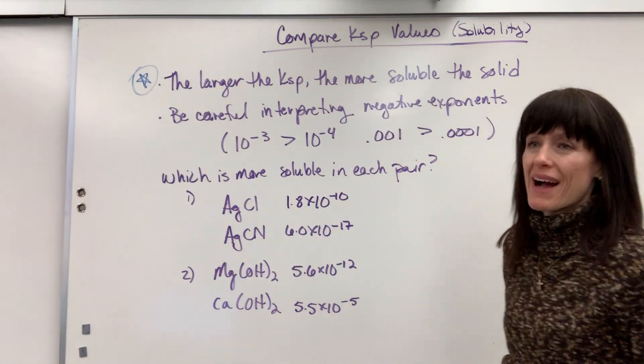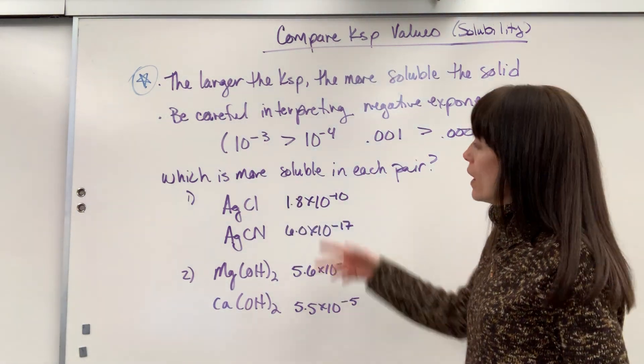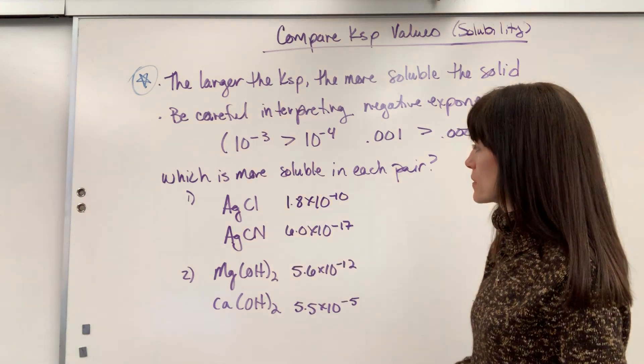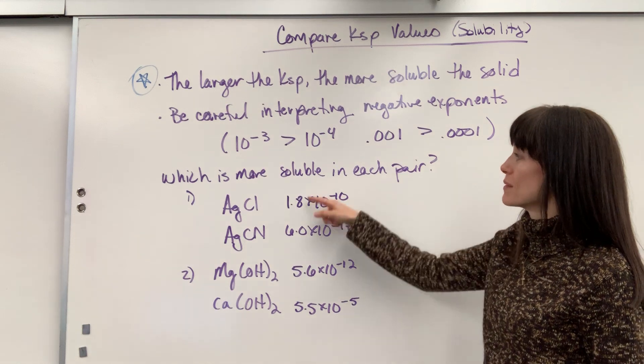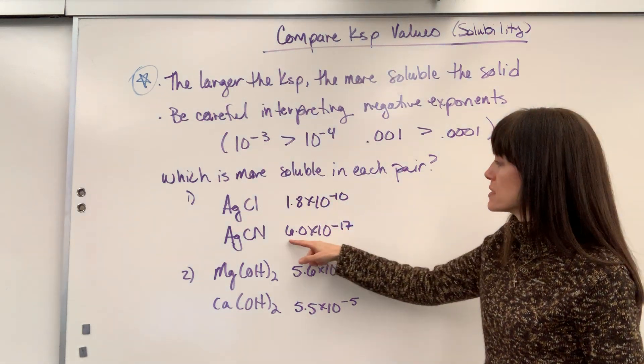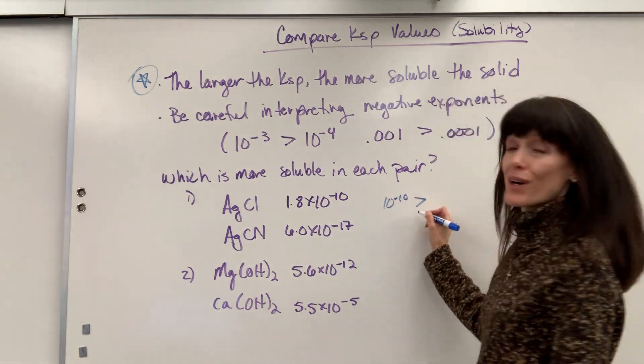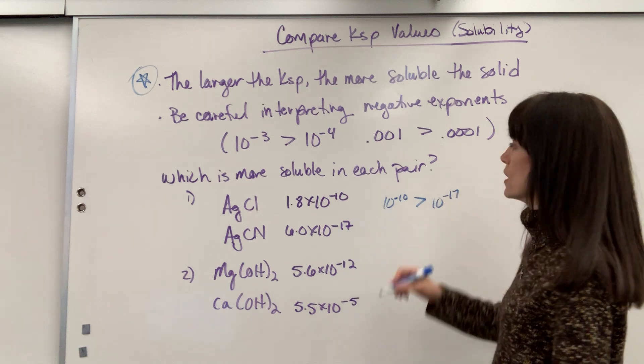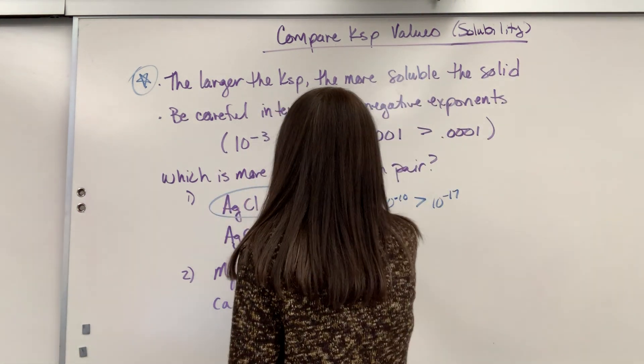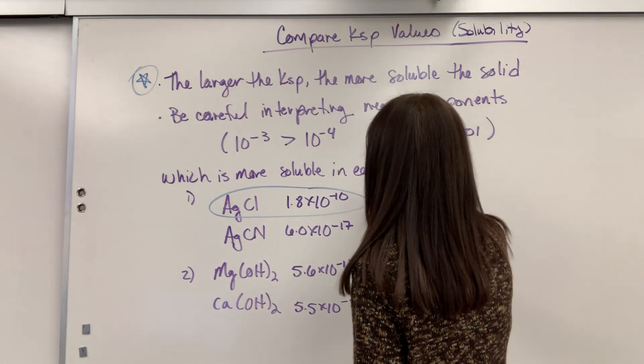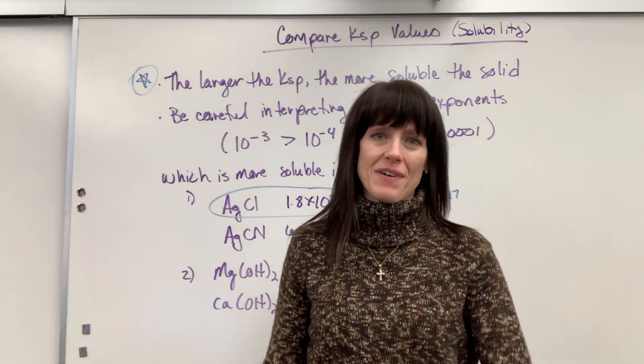Now, here's a question that you're going to be asked. It will say, which is more soluble in each pair? Here's my first pair. I've got silver chloride and silver cyanide. So I look up on a KSP table, silver chloride, 1.8 times 10 to the minus 10, and then 6.0 times 10 to the minus 17. Well, 10 to the minus 10 is a larger number than 10 to the minus 17. So which one's more soluble? The bigger number. So this right here is going to be more soluble.